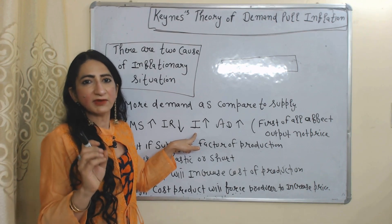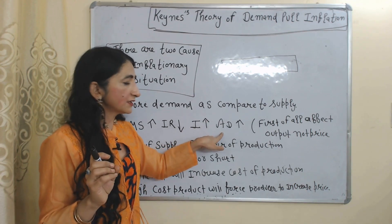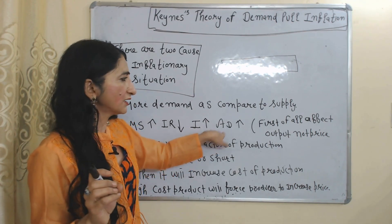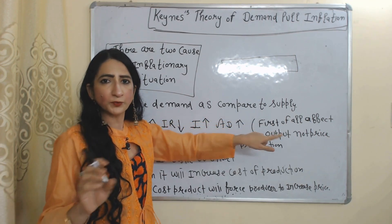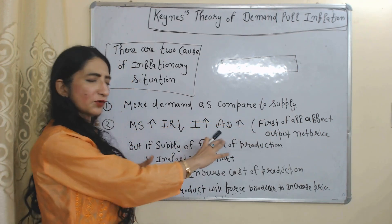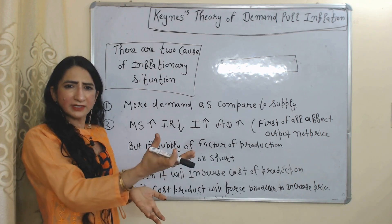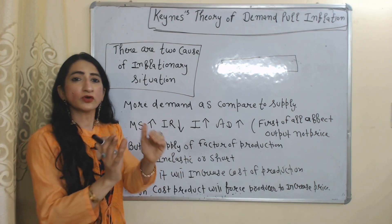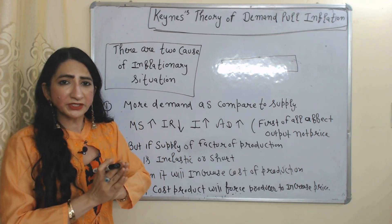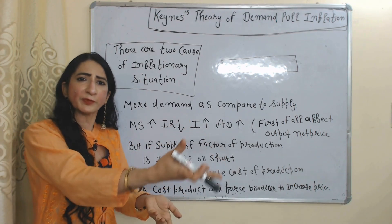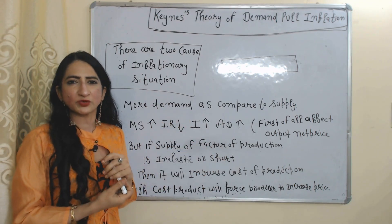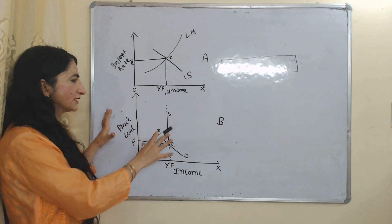As interest in investment increases, investment will increase, which will increase aggregate demand. An increase in aggregate demand first affects output, not prices. But when the supply of factors of production becomes inelastic in the short run, the cost of production will increase. An increase in cost of production will force producers to increase prices, eventually leading to an inflationary situation.